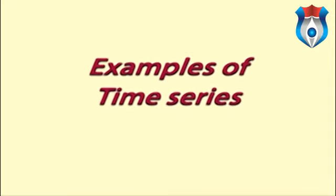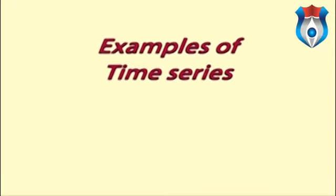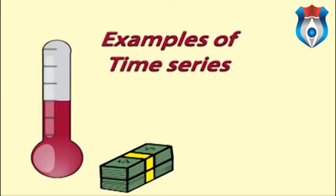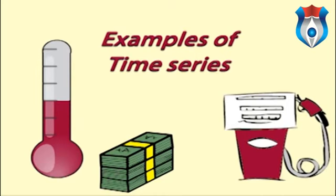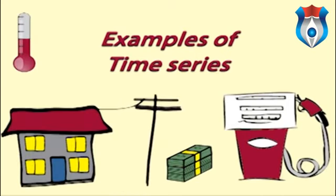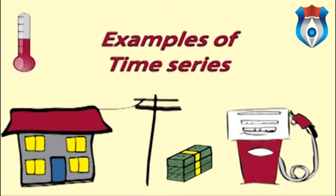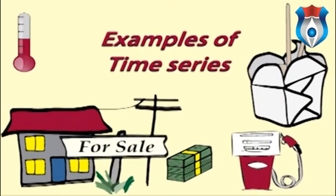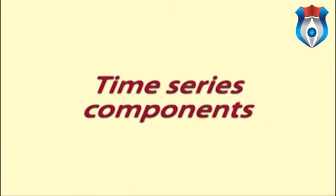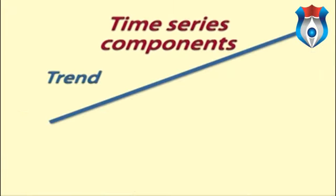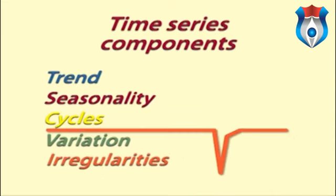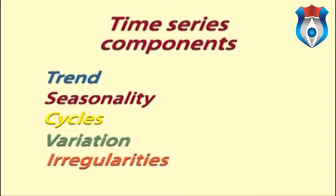Time series data can be collected yearly, quarterly, monthly, weekly, daily, or even hourly. Some examples of time series include: average monthly temperature, annual profit for a company, daily petrol price at the pump, hourly electricity consumption in the home, daily takings at a Chinese takeaway, and quarterly house sales. Time series data has four aspects of behavior: trend, seasonality, cycles, and unexplained variation. There can also be irregularities or outliers in the data which can be related back to real-world occurrences.